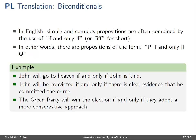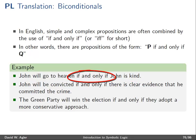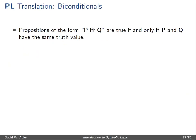For example, in the first sentence 'John will go to heaven if and only if John is kind,' we have two simpler sentences: 'John will go to heaven' and 'John is kind.' These are conjoined together by the use of 'if and only if.' Propositions of the form P if and only if Q, where P and Q are placeholders for other expressions, are true if and only if P and Q have the same truth value.